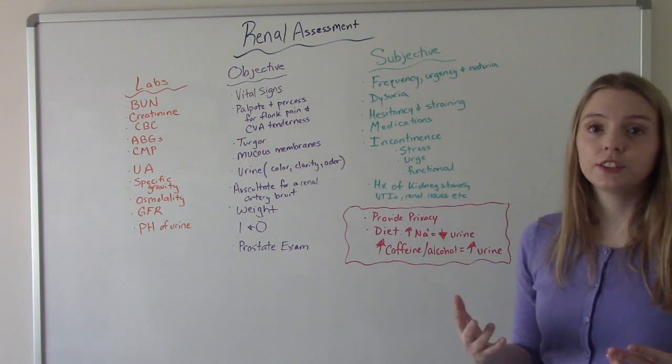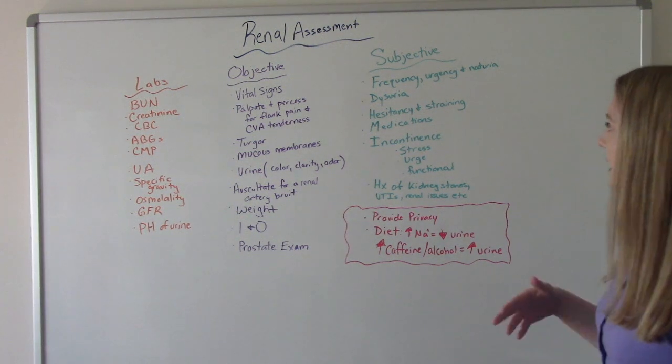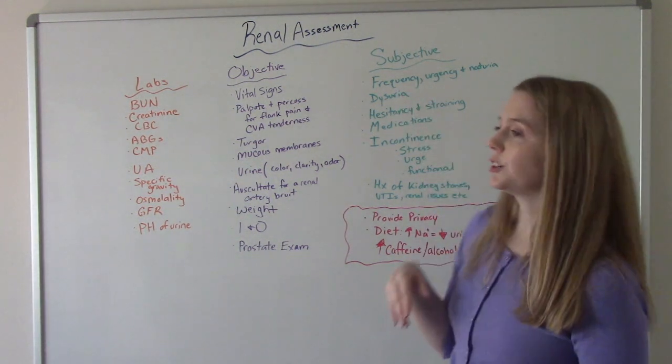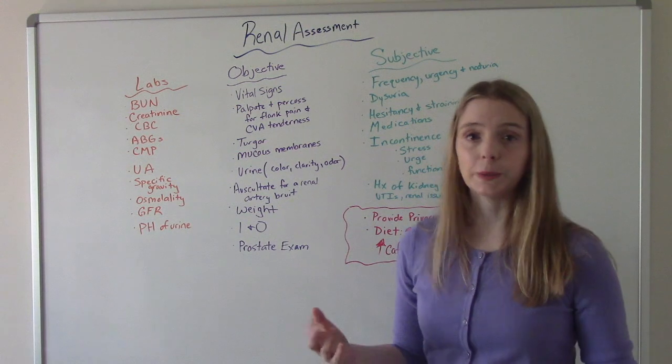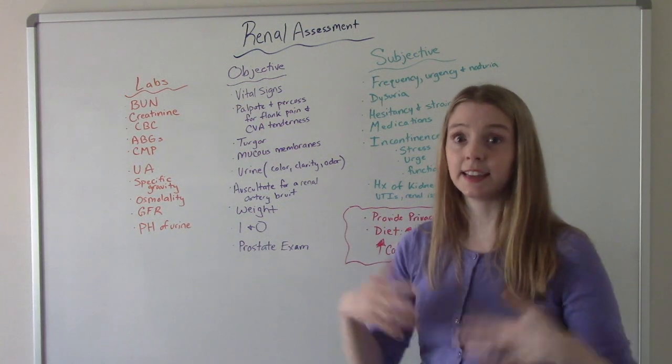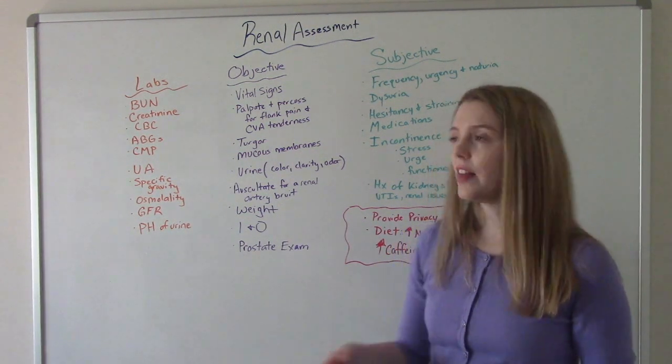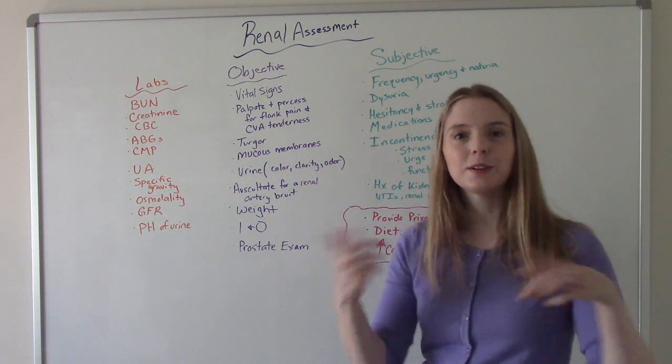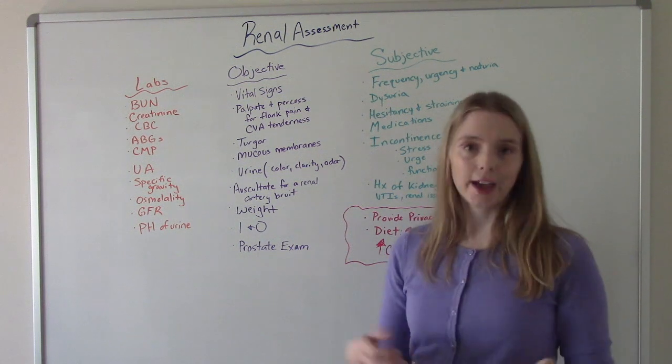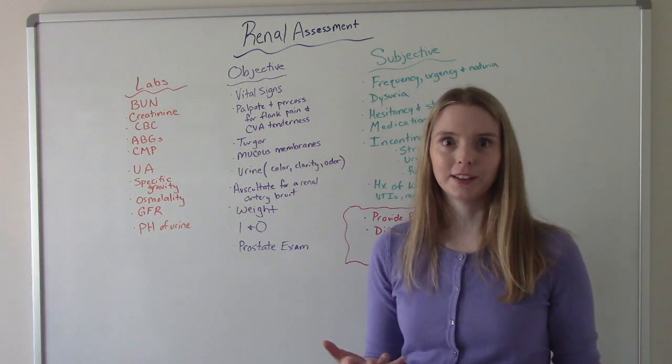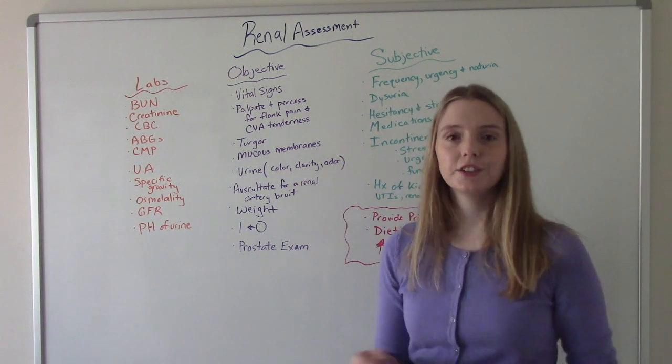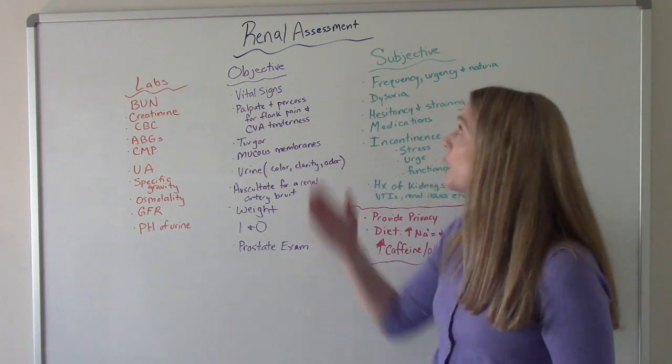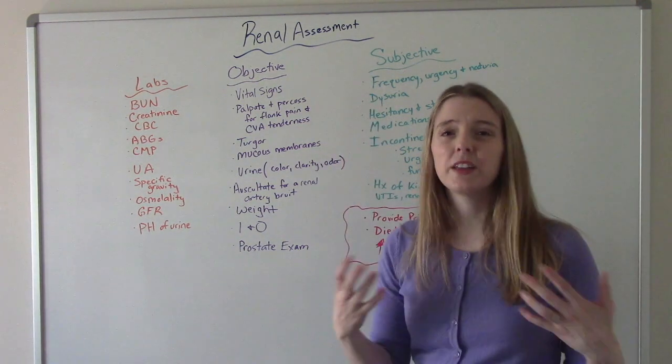Any medications that could affect your urine. So if they say in the first question, yeah, I go to the bathroom very frequently. I go a couple times a day, like 20 times a day. And then you get down to medications and they tell you, well, I'm on a loop diuretic. Then you're going to put two and two together and go, oh, okay. Well, that makes sense that you'd be going so frequently. So any medications that could affect their urine or any medications that could affect the way the kidneys work.